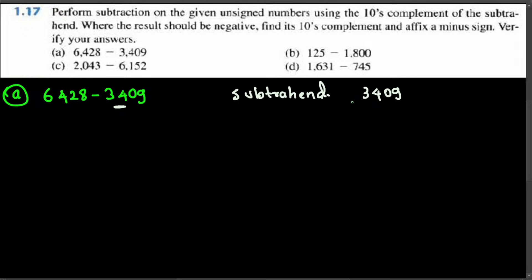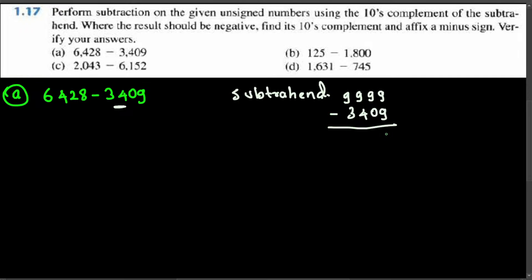The easiest way to find the tens complement is to first find the 9's complement and then add 1 to it. To find the 9's complement, put 9 on top of each digit and subtract. So: 9 minus 9 is 0, 9 minus 0 is 9, 9 minus 4 is 5, and 9 minus 3 is 6.